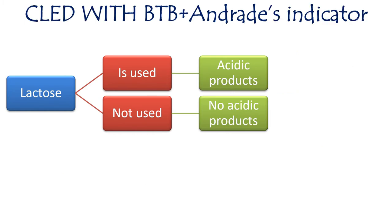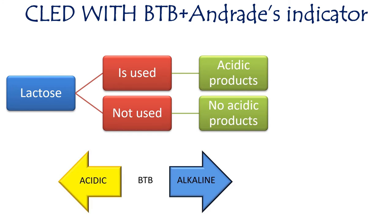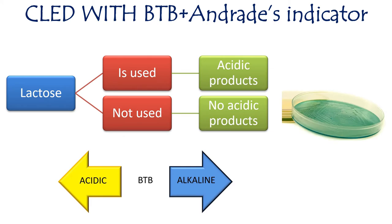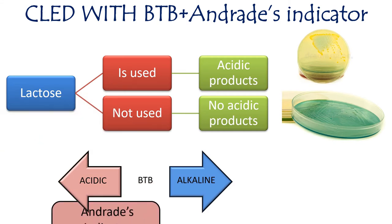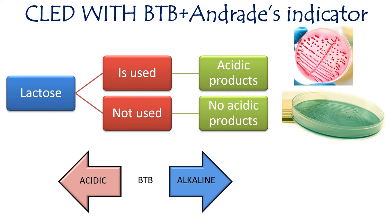There is another type of CLED medium which contains two indicators: BTB and androdase indicator. Bromothymol blue is blue under alkaline conditions and yellow under acidic conditions, so lactose non-fermenters give blue colored colonies and lactose fermenters give yellow colored colonies. When androdase indicator is used along with BTB, it is pink under acidic conditions, thus enhancing the pink coloration under acidic conditions.